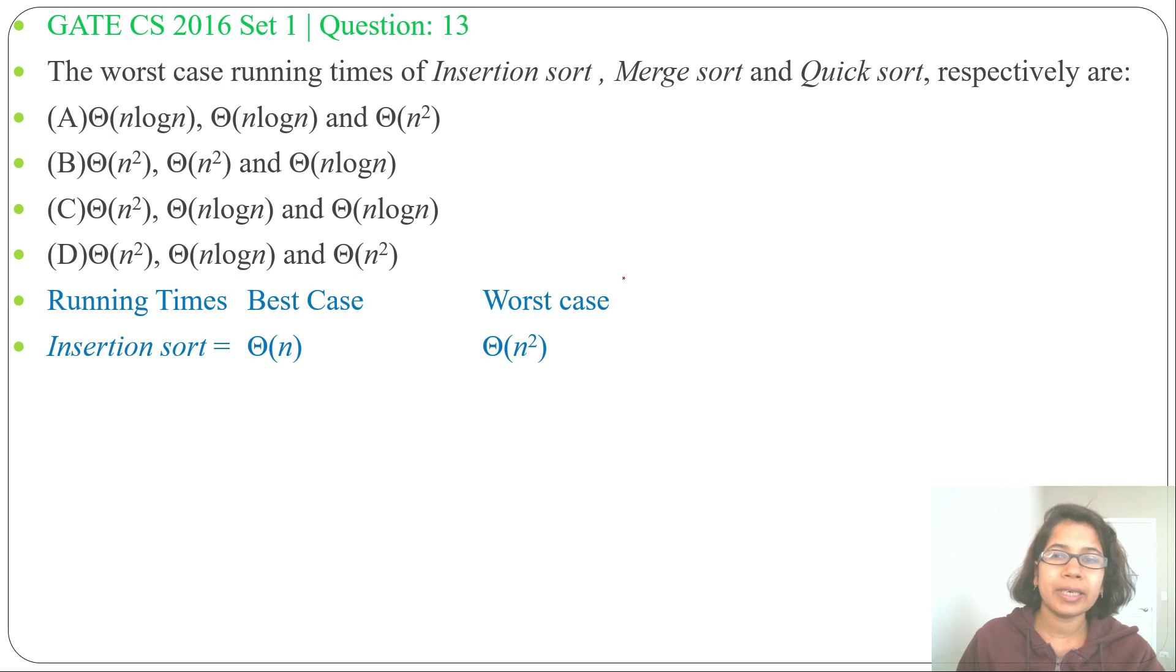For merge sort, its best case, worst case, and average case all running time is theta of n log n.